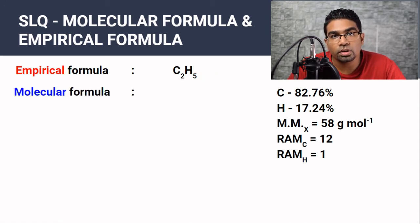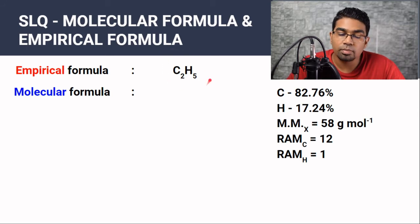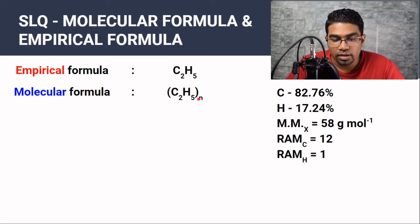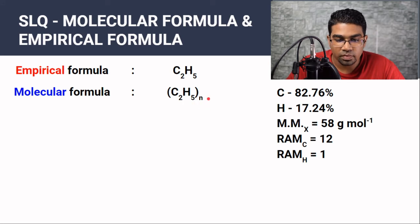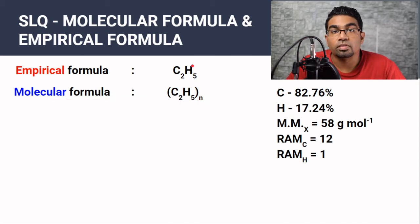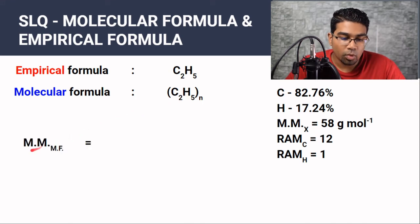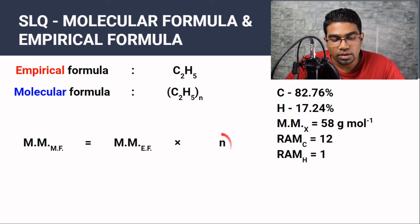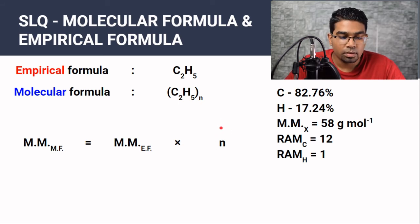From the empirical formula, we know the molecular formula is just a multiple of it: C2H5 × N. The molar mass of the molecular formula is simply N times the molar mass of the empirical formula. The molar mass of X is given as 58 grams per mole.